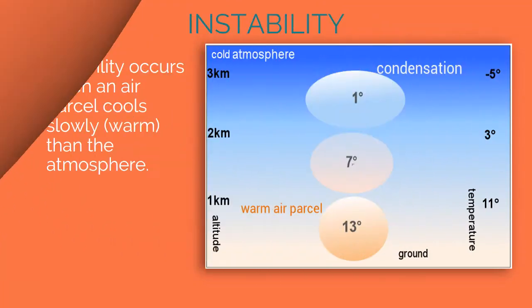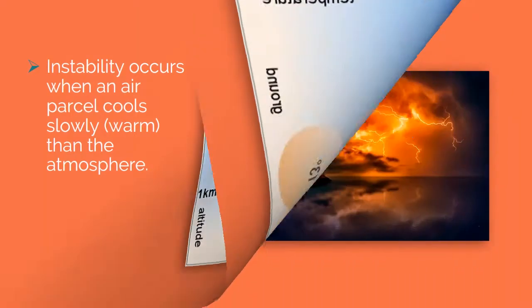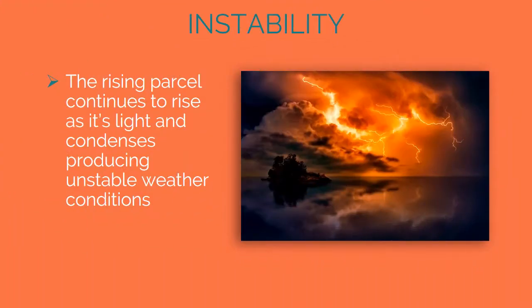Instability occurs when an air parcel cools more slowly than the atmosphere. The rising parcel continues to rise as it is light, and condenses, producing unstable weather conditions.